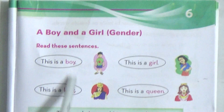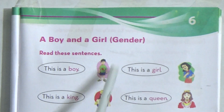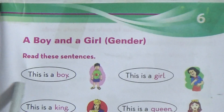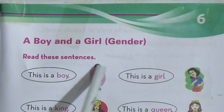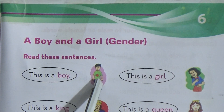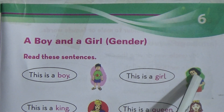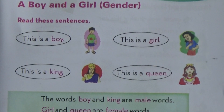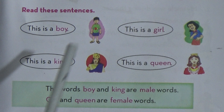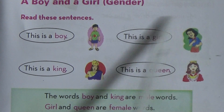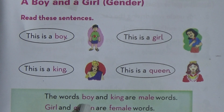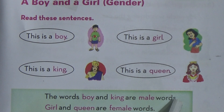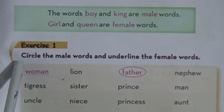Lesson 6: A Boy and a Girl — in bracket, gender. That means here we have to know about gender. Read these sentences. This is a boy — that means he is a male person. This is a girl — that means she is a female. This is a king, and this is a queen. By reading this, what do you understand? These two are male and these two are female. The words boy and king are male words. Girl and queen are female words.